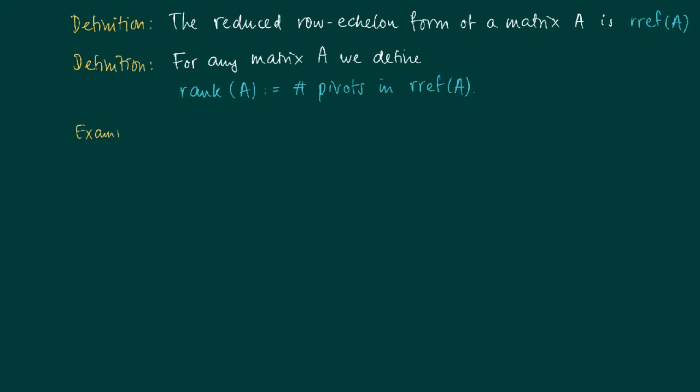For example, what will be the rank of the following matrix? The first row is [1, 0, 0], the second row is [0, 1, 0]. Clearly, this is already the row reduced echelon form of matrix A, and we have two pivots, so the rank is 2.